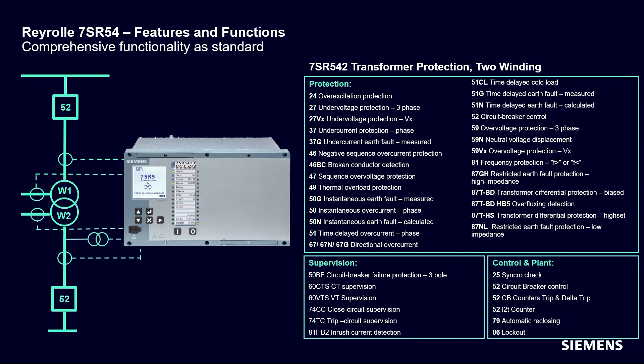The device instrumentation and metering provides real-time measured quantities and data, displayed on the relay fascia LCD or via the data communications interface. Over-excitation protection 24 detects excess core flux density that could cause overheating. Under-frequency protection on the substation transformer incomer can be used to initiate load shedding of the connected bus bar loads.